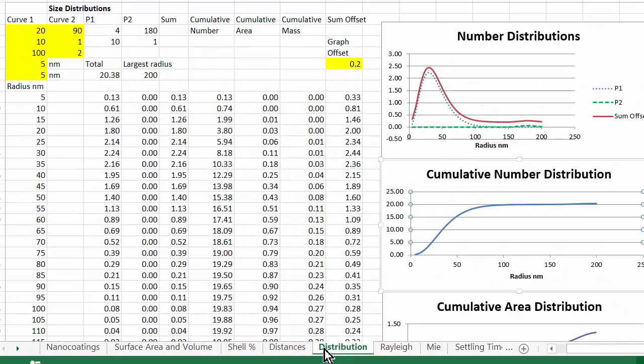When we buy nanoparticles, we want to know what we're buying. So when the manufacturer claims that 95% is smaller than so many nanometers, what does this mean? Well, actually it can mean very little. Let's create a distribution of nanoparticles.